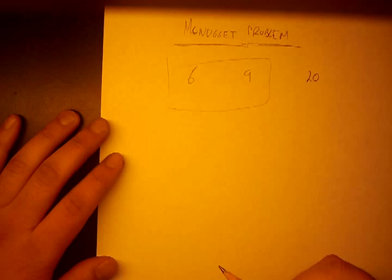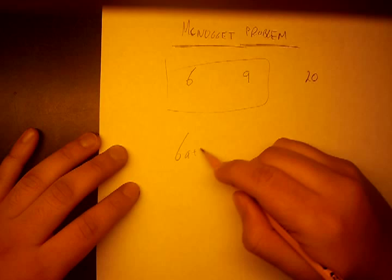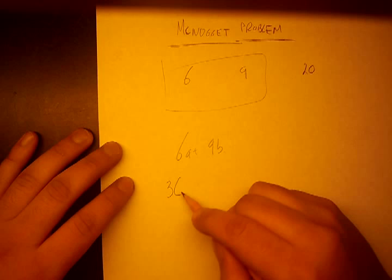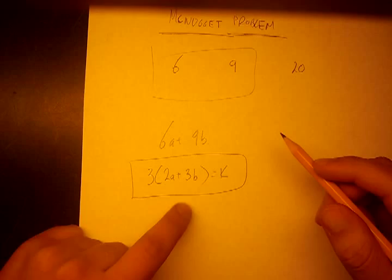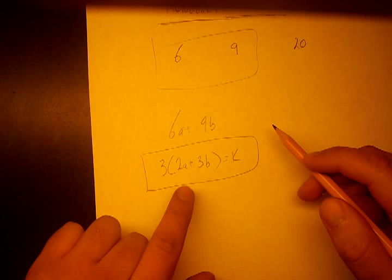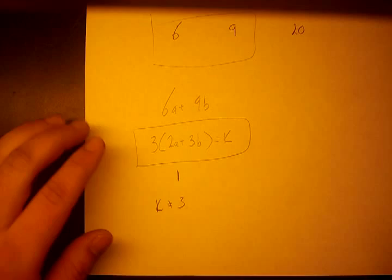First, let's look at just six and nine and find the Frobenius number of these two. We write six·a plus nine·b, and since both have a factor of three, we factor that out: three times (two·a plus three·b) = k. In the first example we found the Frobenius number of two and three is one, so two·a + three·b cannot equal one, which means k cannot equal three.